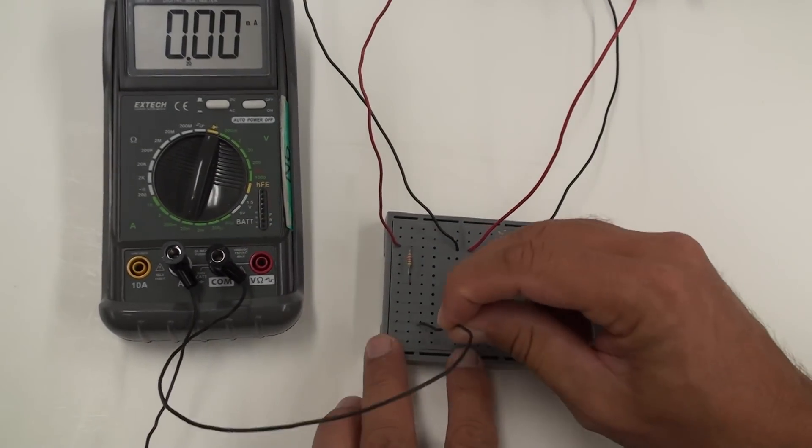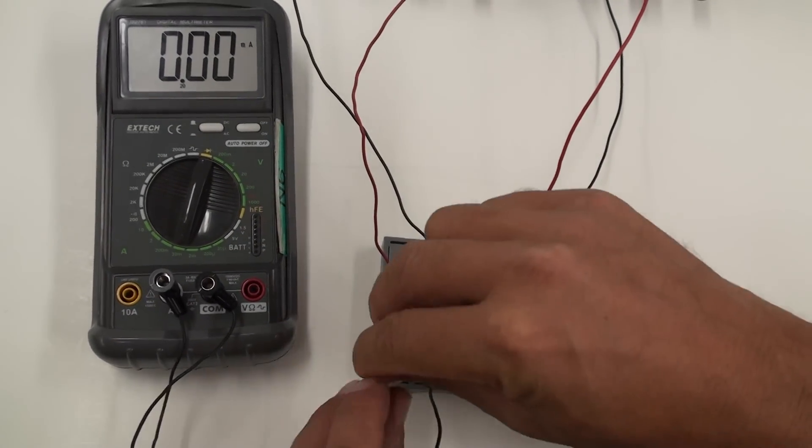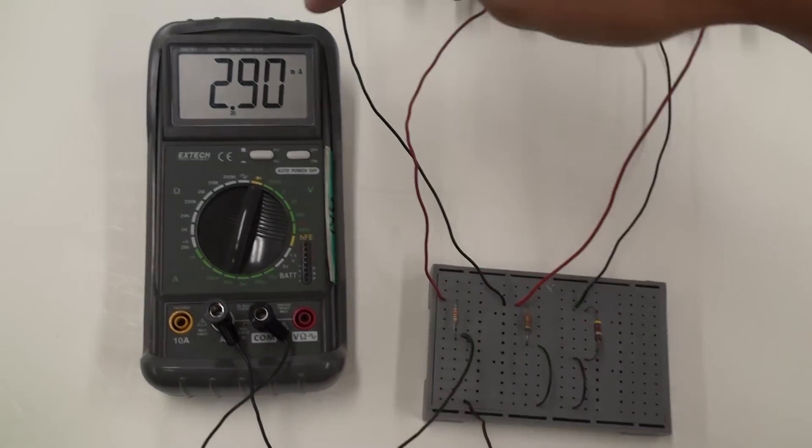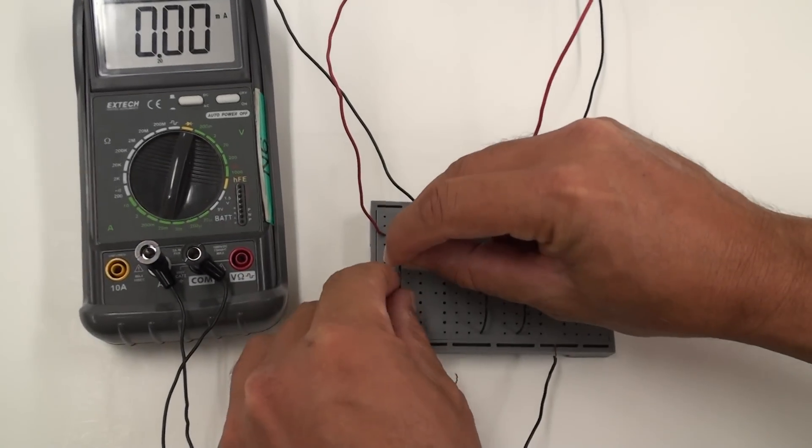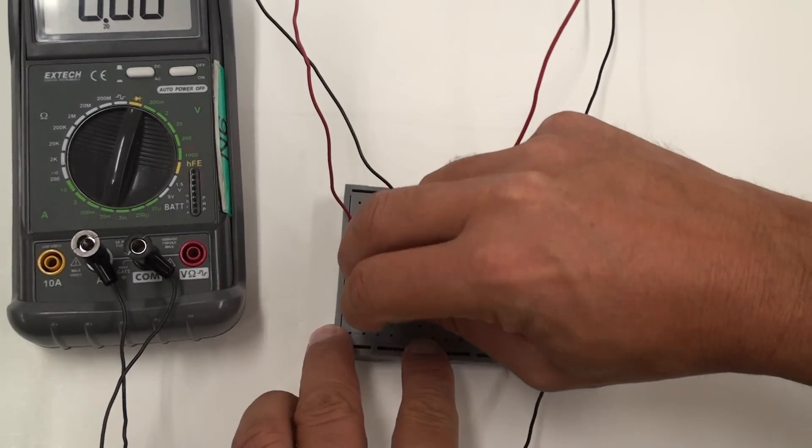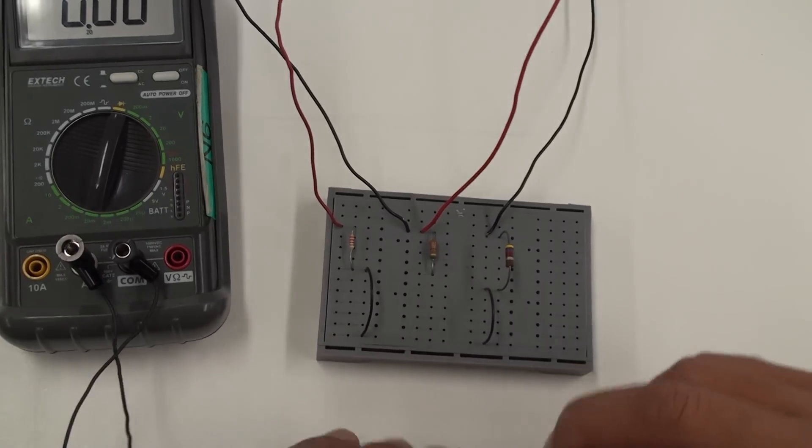In practice, this means simply replacing each jumper with the ammeter. Don't be overly concerned with the sign of the currents you read. You may record absolute values for these currents if you wish.